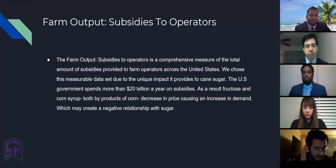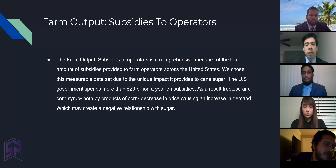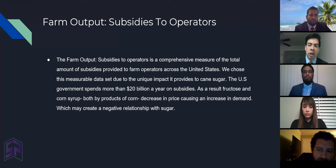The farm output subsidies to operators is a comprehensive measure of the total amount of subsidies provided to farm operators across the United States, which shows this measurable dataset due to the unique impact it provides cane sugar. The United States government spends more than 20 billion US dollars a year in subsidies. As a result, fructose, corn syrup, and other corn byproducts have decreased in price, causing an increase in demand, which may create a negative relationship with cane sugar.